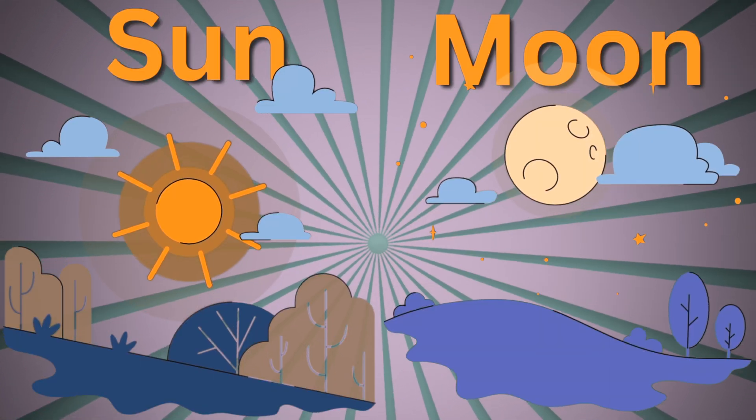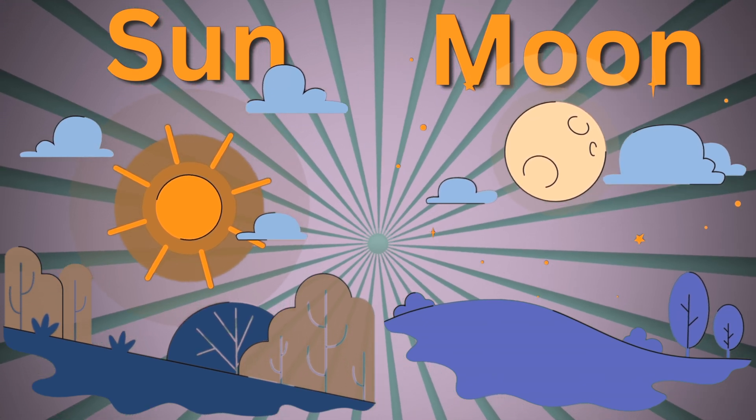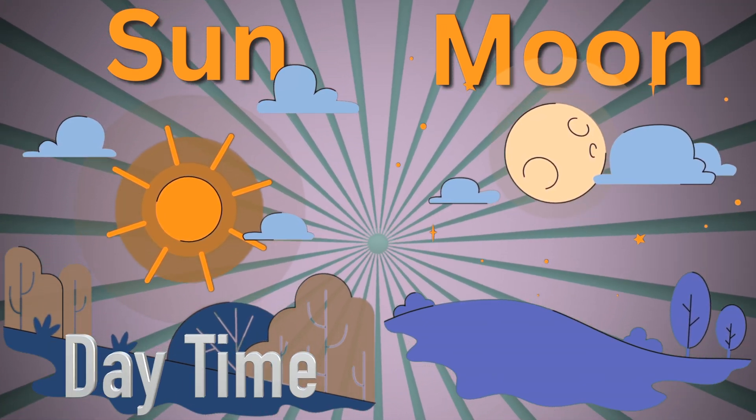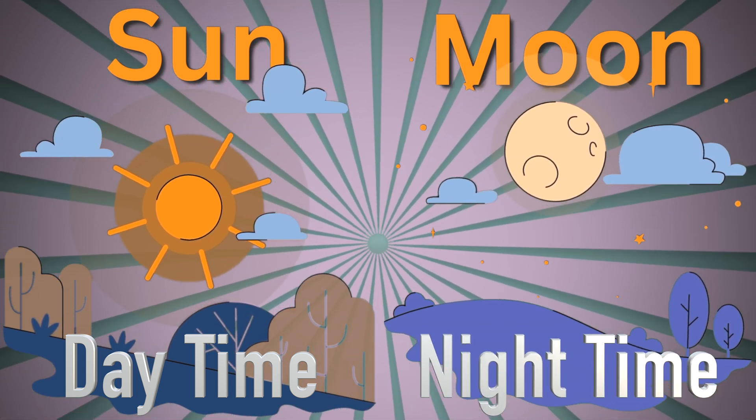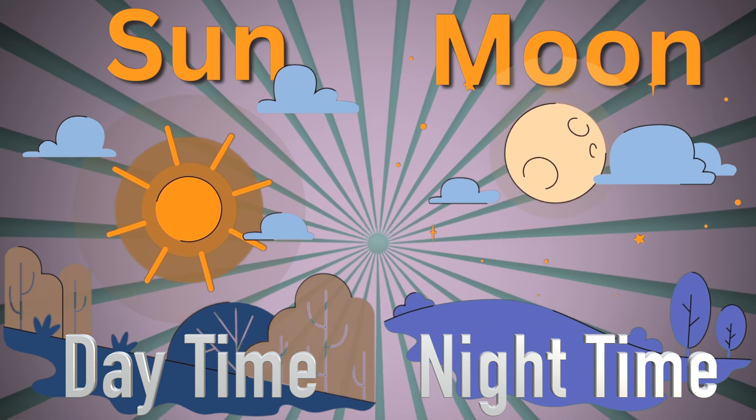Did you know that the sun and the moon look like circles in the sky? That's right. When you look up during the day, you see the bright circle of the sun. And at night, you can see the glowing circle of the moon. They're not perfect circles, but they're close enough.